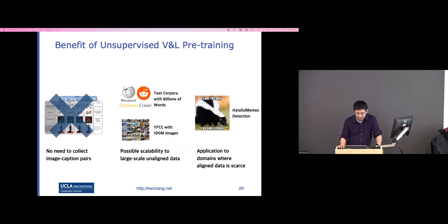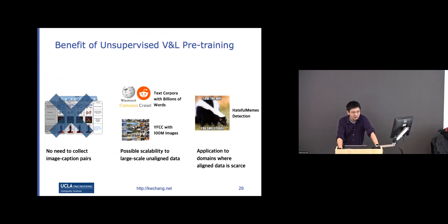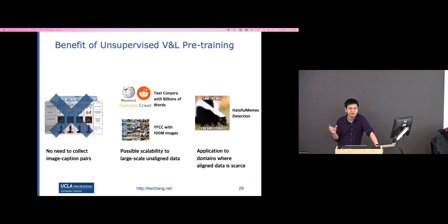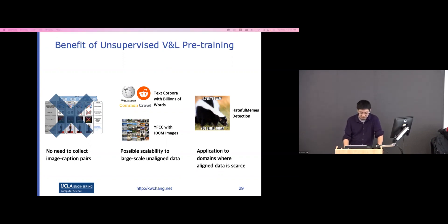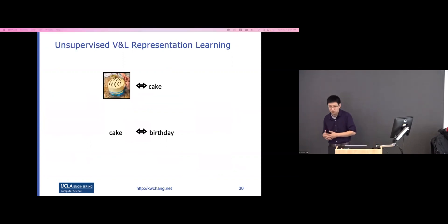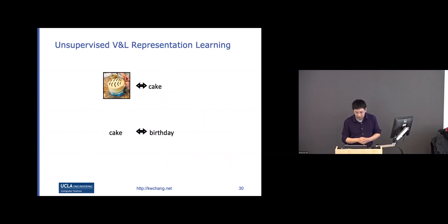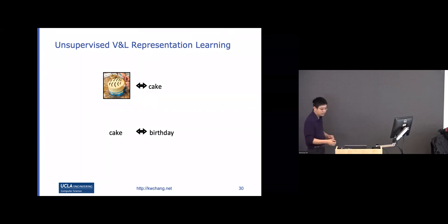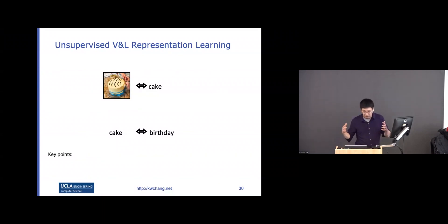Unfortunately, we find this is not easy. It's not like unsupervised machine translation, because visual and language data are very different. People have a bias that they don't mention things that are obvious — you wouldn't say 'yellow banana,' but you might say 'green banana.' So these two spaces can't be easily aligned without any supervision. However, the good news is that if we have some anchor words — like the 80 basic objects in MS COCO — that's good enough to bring the two spaces together.